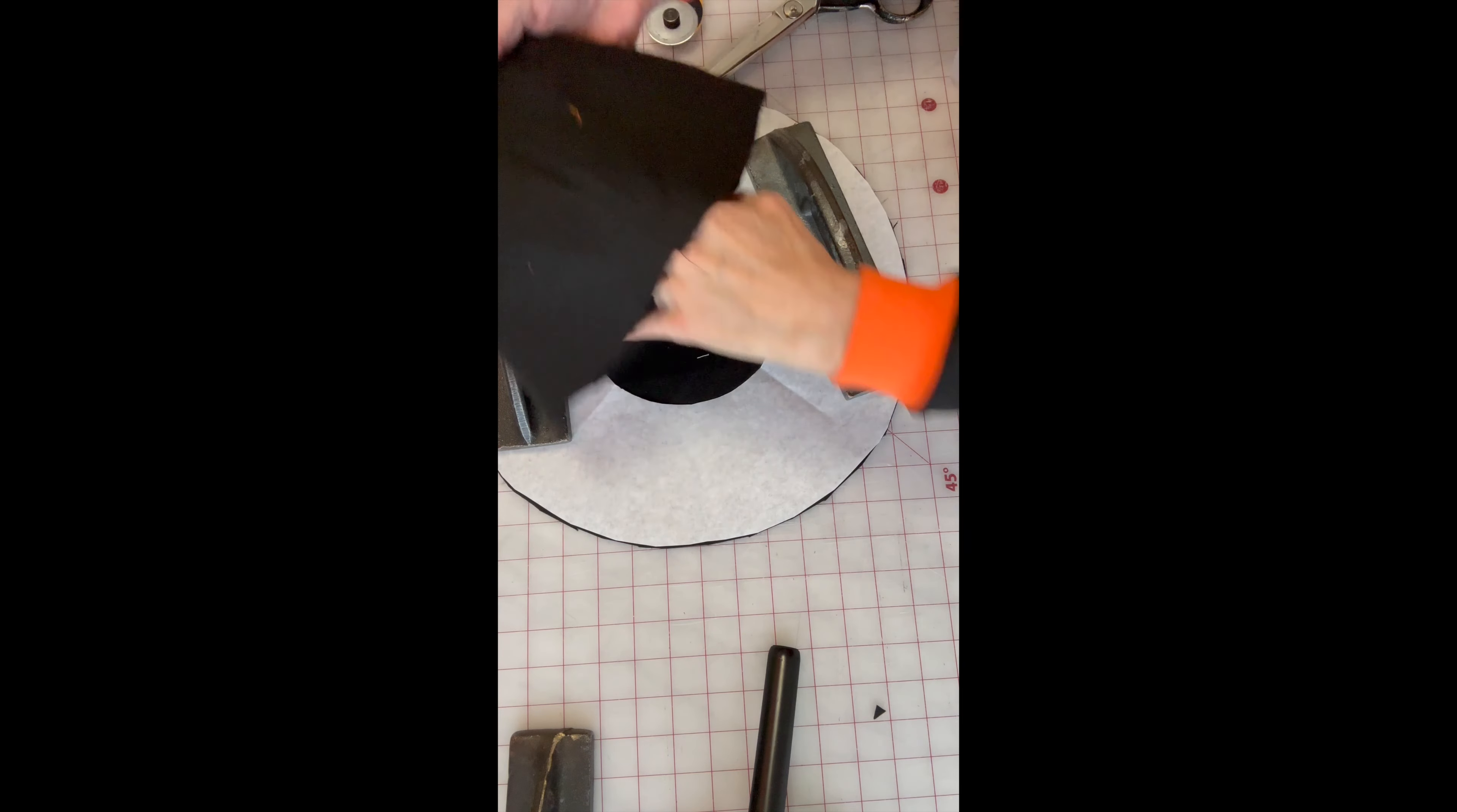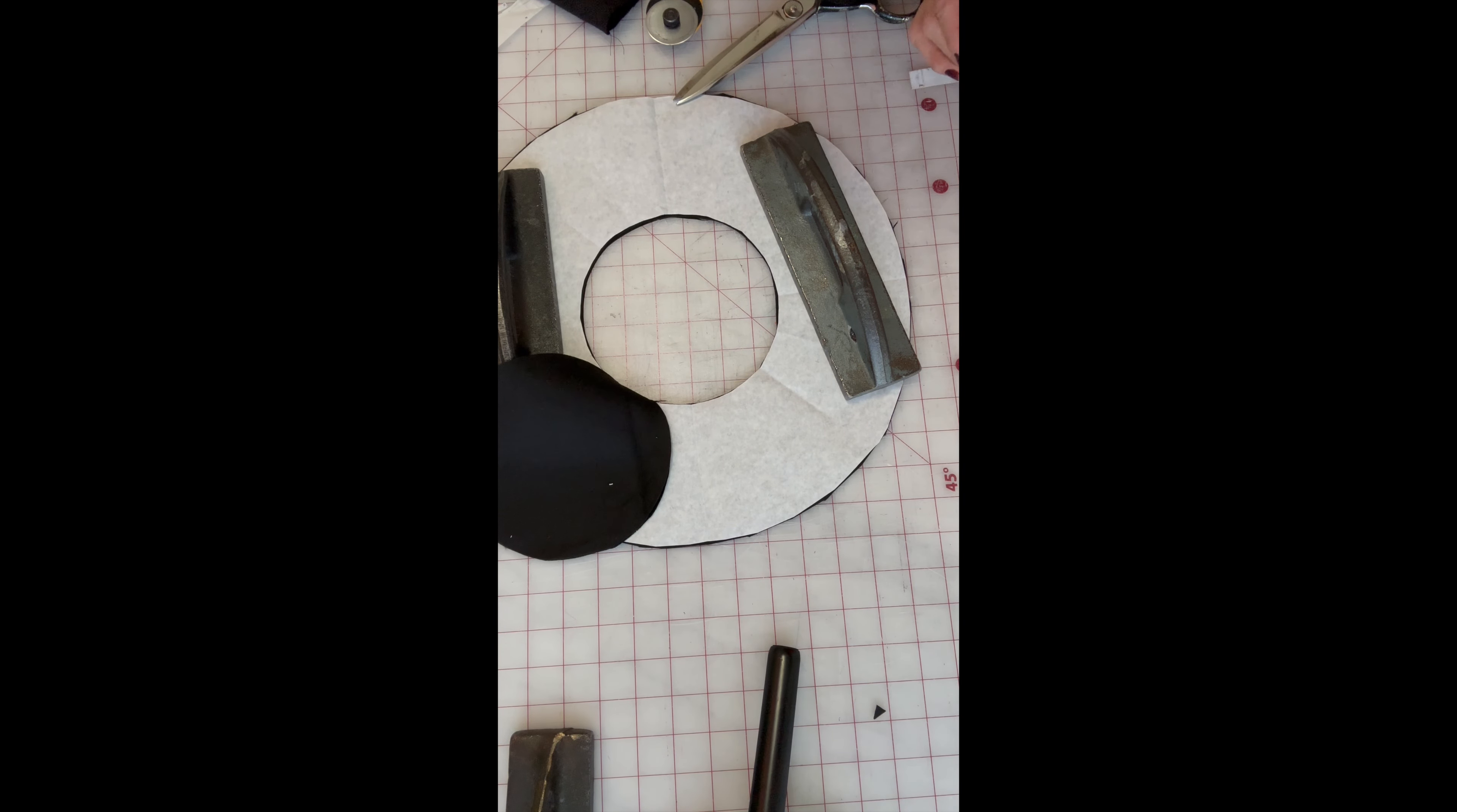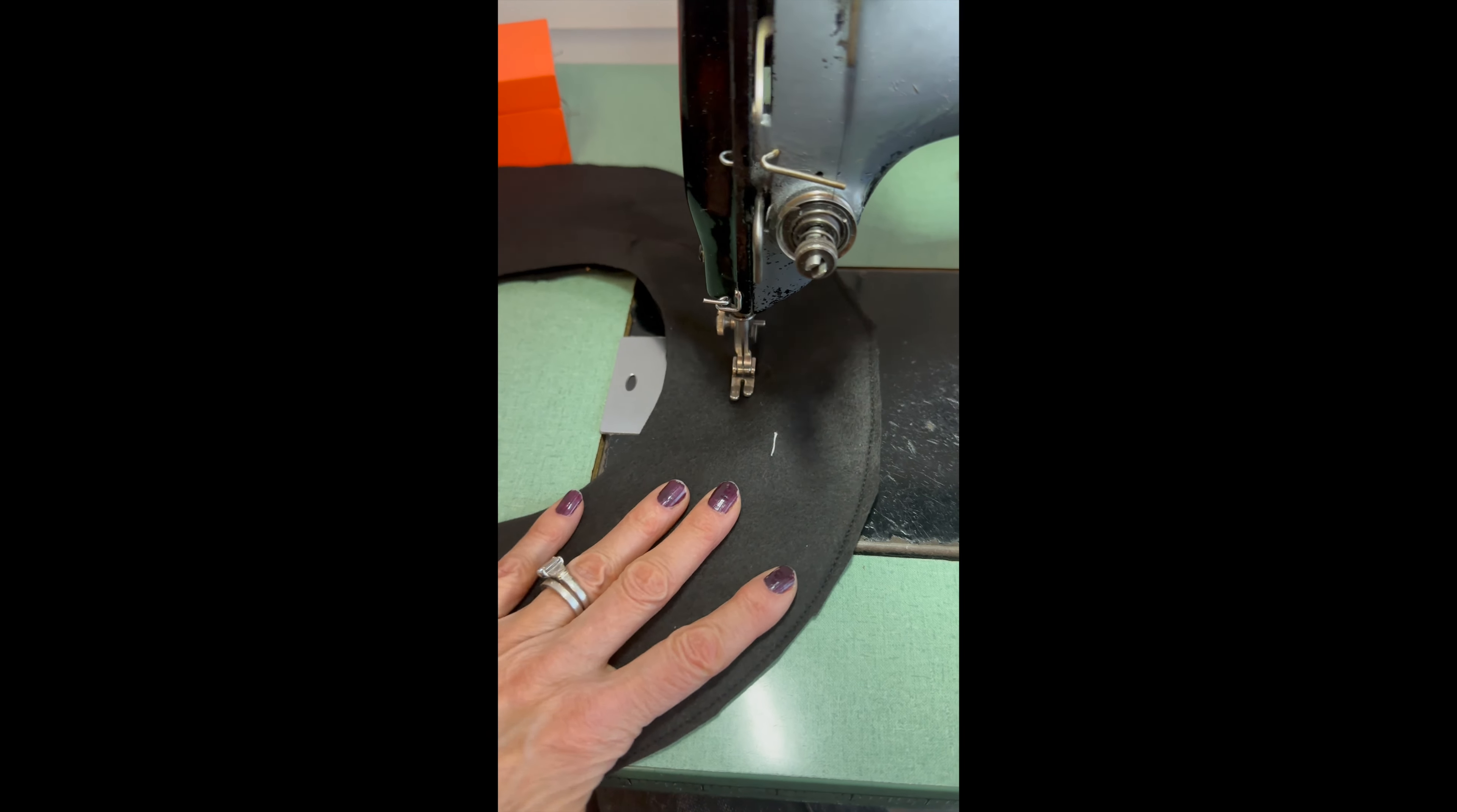Top is ready, full house is ready, and here is the brim. Fused one side and now I'm stitching edges. Adding one more stitch just for safety.